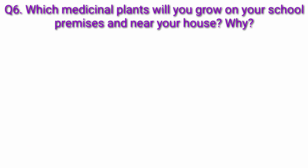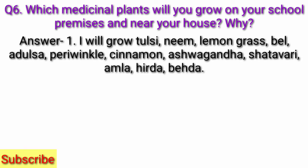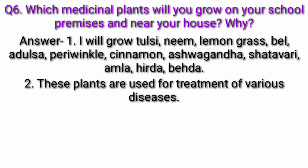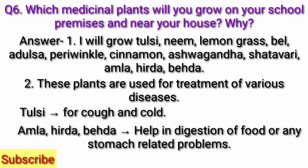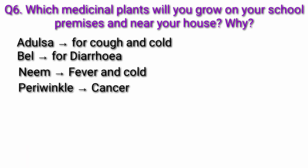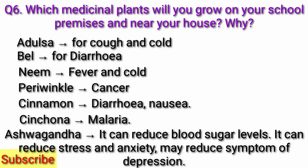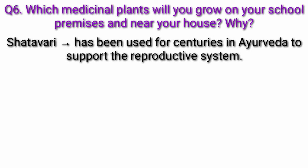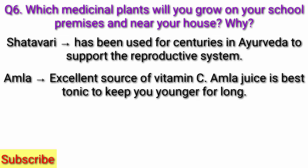Question 6) Which medicinal plants will you grow on your school premises and near your house? Why? Answer: I will grow tulsi, neem, lemongrass, bell, adulsa, periwinkle, cinnamon, ashwagandha, shatavari, amla, hirda, and beheda. Tulsi — for cough and cold. Amla, hirda, and beheda — help in digestion and stomach-related problems. Adulsa — for cough and cold. Bell — for diarrhea. Neem — fever and cold. Periwinkle — cancer. Cinnamon — diarrhea and nausea. Cinchona — malaria. Ashwagandha — reduces blood sugar levels, stress, anxiety, and symptoms of depression. Shatavari — supports the reproductive system in Ayurveda. Amla — excellent source of vitamin C; amla juice is the best tonic to keep you younger.